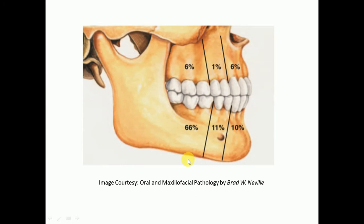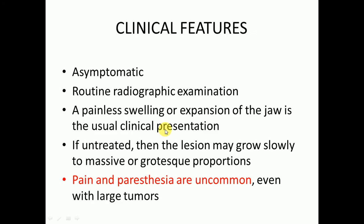This image shows the different percentages by anatomic area — ameloblastoma is most commonly present in the mandible, in the posterior area. Clinically, it is mostly asymptomatic and is diagnosed on routine radiographic examination. If the lesion is small, a painless swelling or expansion of the jaw is the usual clinical presentation. If untreated, the lesion may grow slowly into a massive lesion.